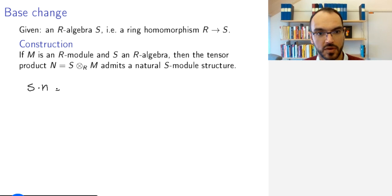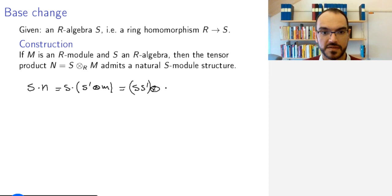Such an element is a linear combination of elements s' ⊗ m, and I simply act in the first factor. This means that now I can view my N as a module over S, and this is the natural S-module structure.